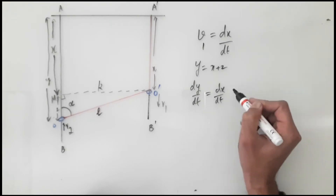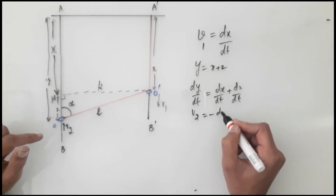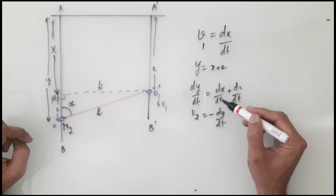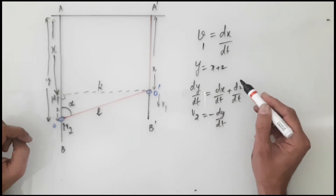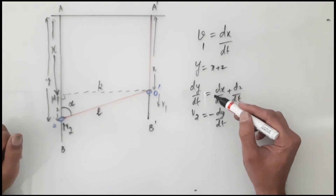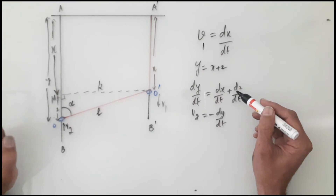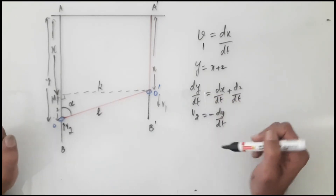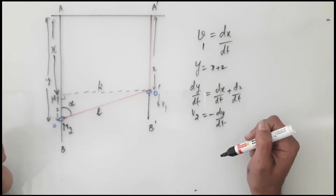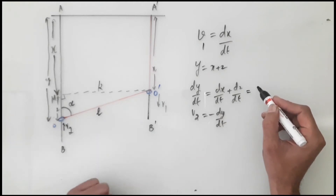Differentiating both sides with respect to time, we need to understand that v2 is negative of dy/dt if v2 is to be a speed. Looking at this equation, dx/dt is a positive term and dz/dt is a negative term. The magnitude of dz/dt needs to be more than the magnitude of dx/dt if this point is to move up — so something like minus one versus minus 1.2 — making dy/dt a negative term, and then v2 = −(dy/dt) becomes positive, giving us a proper speed.